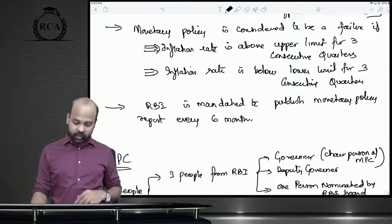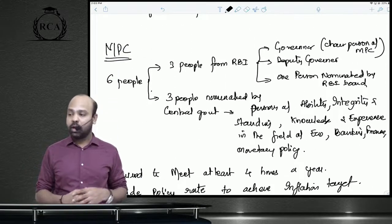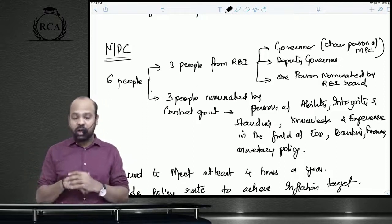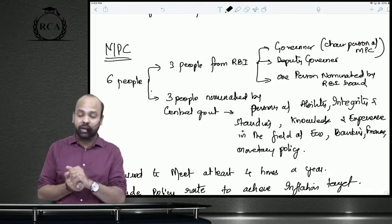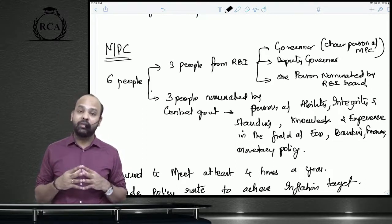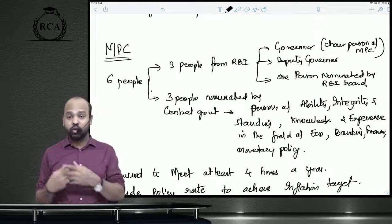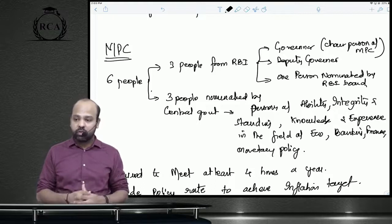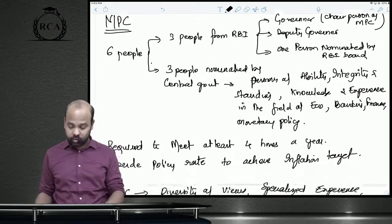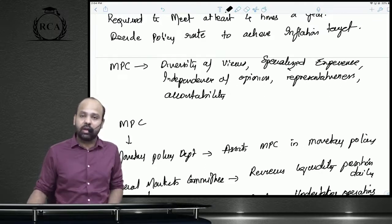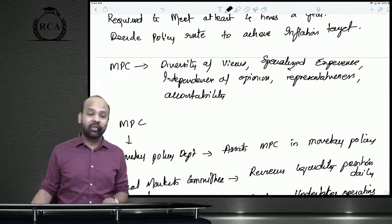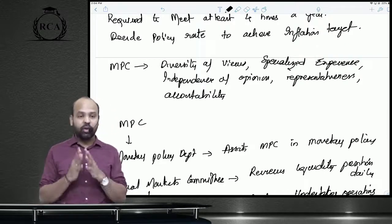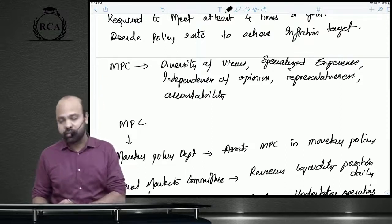The monetary policy committee (MPC) consists of six members: the RBI Governor, a Deputy Governor, and one person recommended by the RBI board — plus three members nominated by the central government who have knowledge of banking, finance, or monetary policy. The MPC meets at least four times a year to decide the policy rate (repo rate) to achieve the inflation target. The objectives of forming the MPC were to bring in more representativeness, specialization, and accountability. The MPC is assisted by the monetary policy department, while the financial markets committee reviews liquidity and the financial markets operational department conducts daily open market operations.